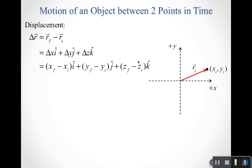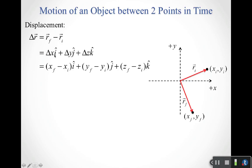If we're interested in what happens as the object starts somewhere and moves somewhere else — here it is initially at some x_initial, y_initial, and here it is at some final position x_final, y_final — then the displacement is defined as a vector subtraction problem. It is the difference between the final position vector and the initial position vector: final minus initial.